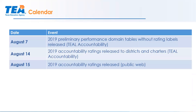Ratings are approaching. On August 7th, campus administrators will receive their preliminary performance domain data tables — your data without rating labels — in TEAL accountability. On August 14th, district and campus ratings with rating labels will be released in TEAL. On August 15th, all accountability ratings for all campuses and districts will be public and posted to the agency website and across newspapers.